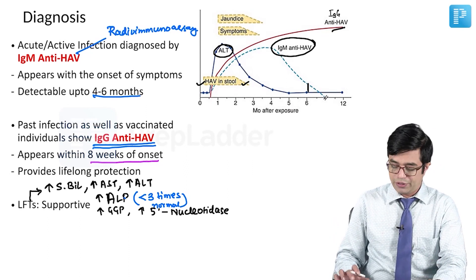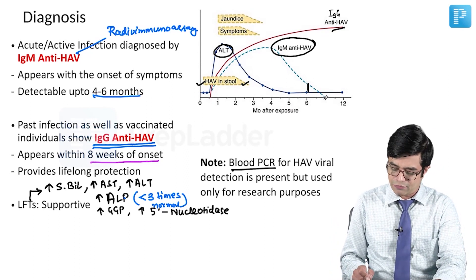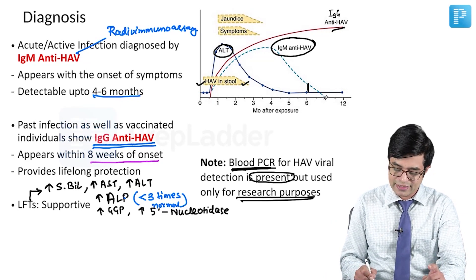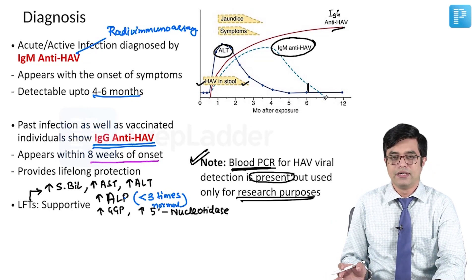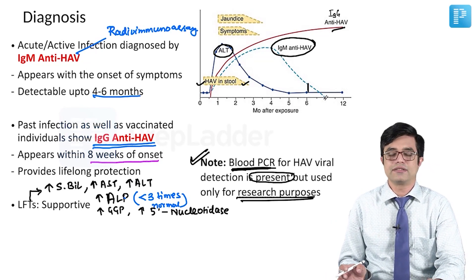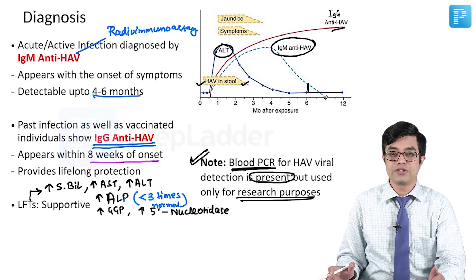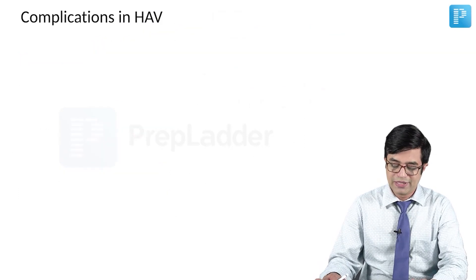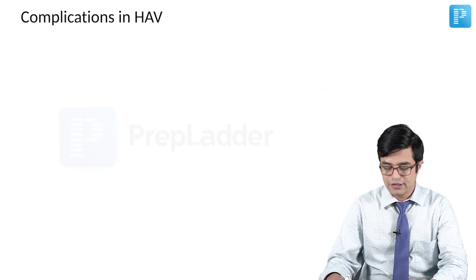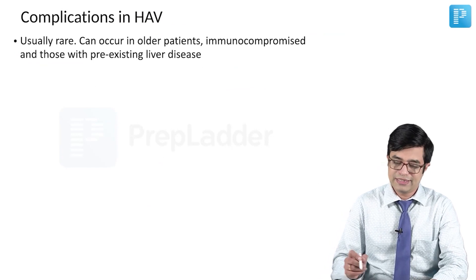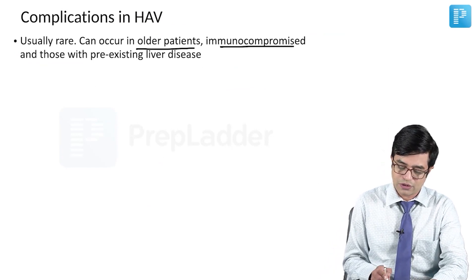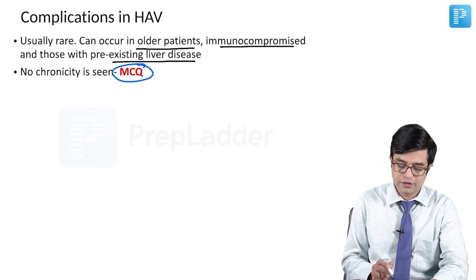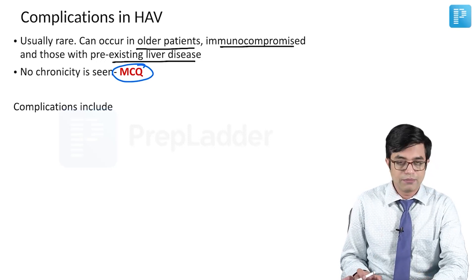Blood PCR for HAV viral detection is now available, but it is used only for research purposes, and in a resource-limited setting like ours it does not practically exist. Complications in HAV are rare. They are more likely in older patients, immunocompromised individuals, or those with pre-existing liver disease. No chronicity is seen — HAV never shows chronicity. This is an MCQ point.